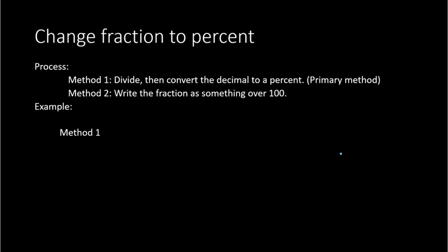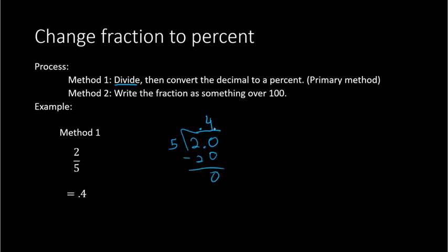Using method one, let's say we had two-fifths and we want to write this as a percent. We divide two by five — fraction means division. Two divided by five equals 0.4. As a percent, we move the decimal point two places to the right. We need to add a zero at the end to move it over, so we get 40 — the answer is 40%.